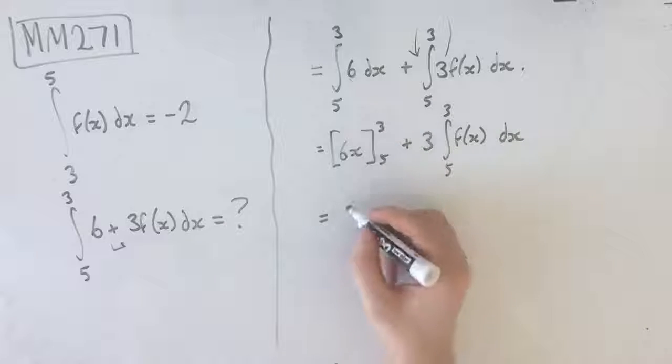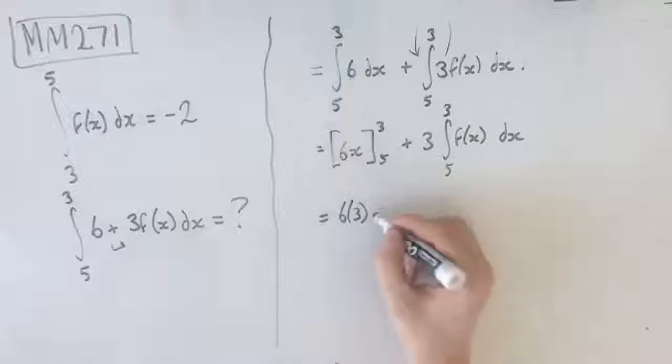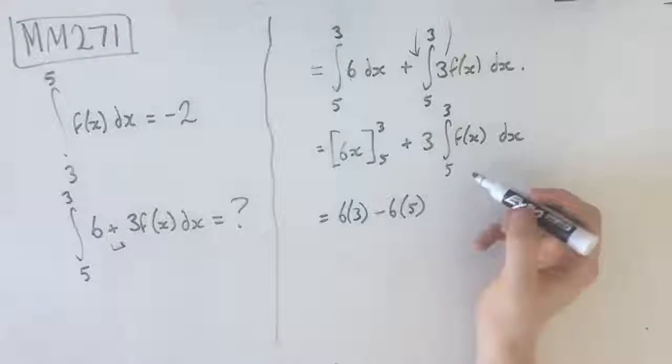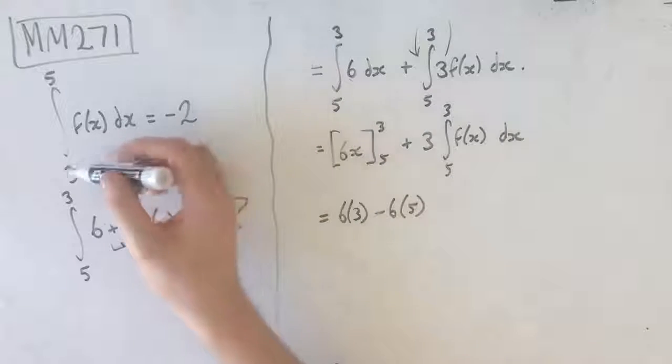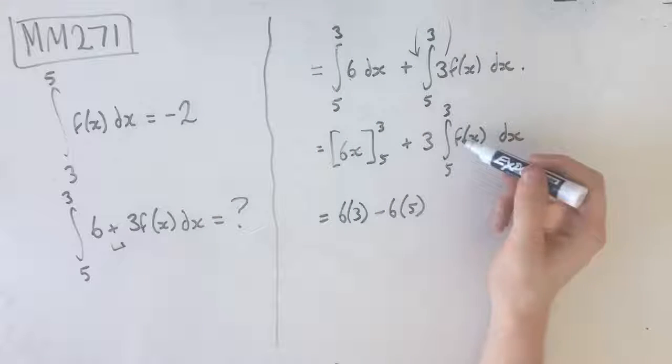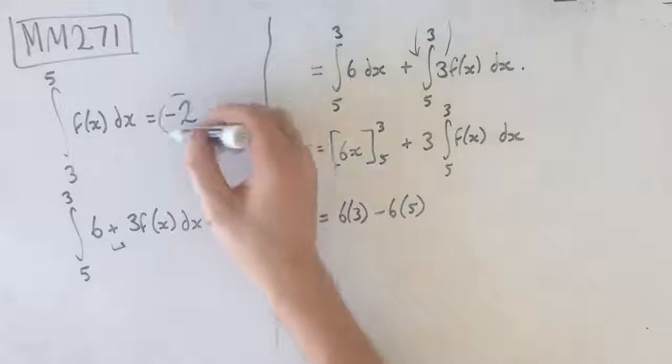Subbing in these values, we get 6 times 3 minus 6 times 5. Now, we know that the integral from 3 to 5 of f(x) is -2, which means that the integral from 5 to 3 of f(x) is the negative version of this.